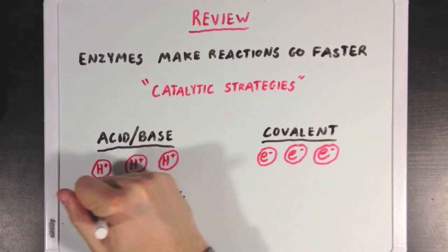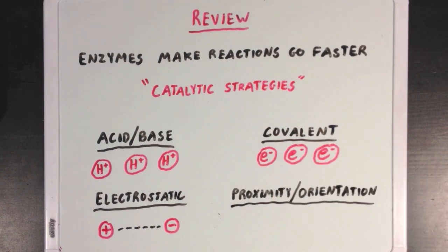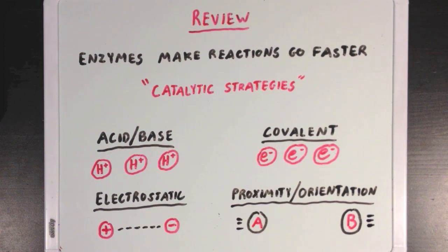There's electrostatic catalysis, where enzymes use charged molecules or metal ions to stabilize big positive or negative charges. And we also have proximity and orientation effects, where enzymes make collisions between reacting molecules happen a little more often.